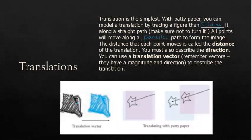Here, this shell — and it doesn't even have to be a polygon, it could be any kind of image — is translating to this blue one, so it slid over to the side. We can see this arrow is our translation vector; it shows the direction and how far. We can translate with patty paper: if we put a piece of patty paper on top, trace the original image, and then slide that patty paper over, we would have a translation.